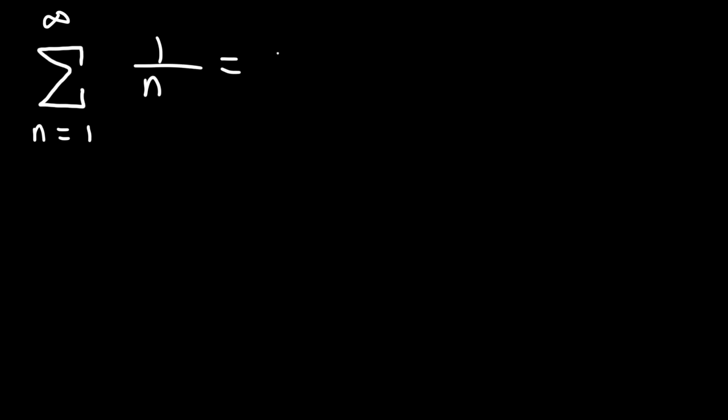If we list out the terms, when n is 1, it's just going to be 1, when n is 2, it's 1 half, and then plus 1 third, plus 1 fourth, and plus 1 fifth, and so forth.